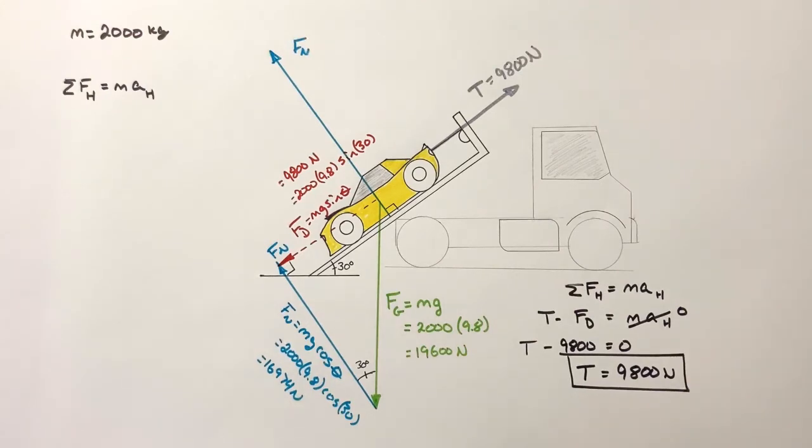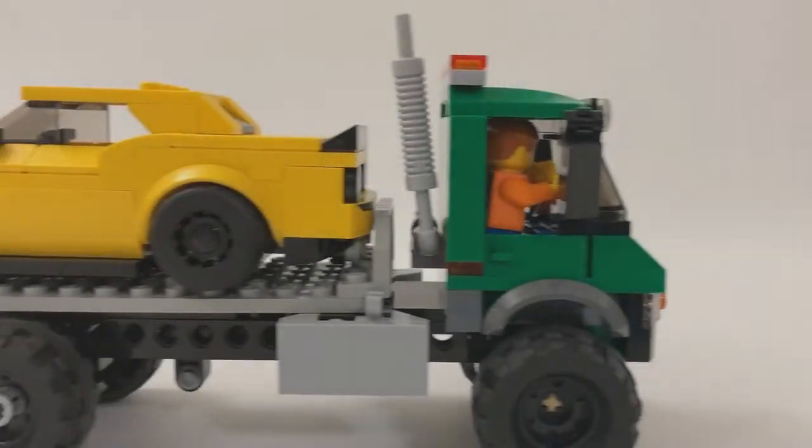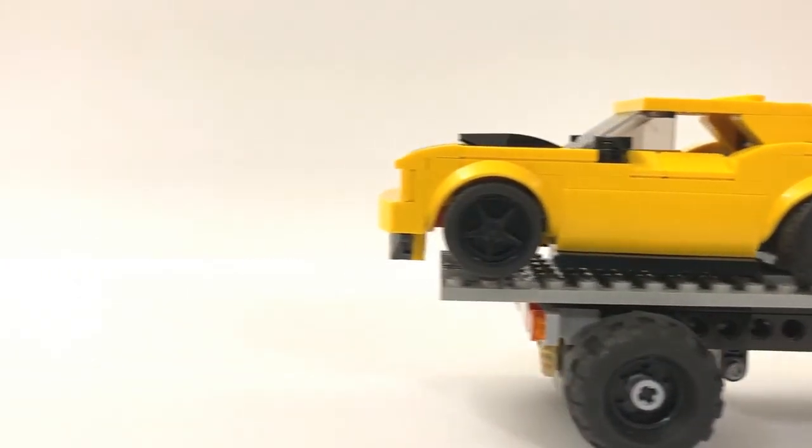And this is how we deal with the free body diagram for an object on a hill, or in this case, on a ramp. I need a faster car.